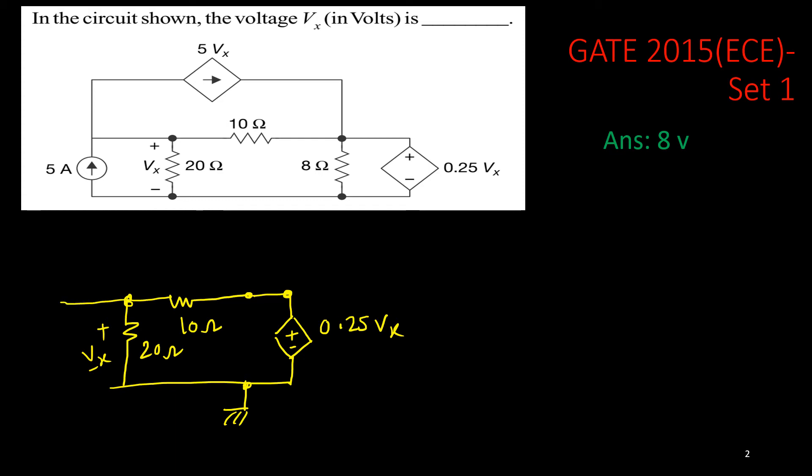Now, I'll add this current source, independent current source here. It is 5 ampere, and a dependent current source from here to here, the same node. Let's say dependent current source.